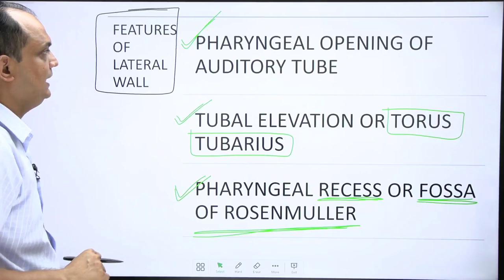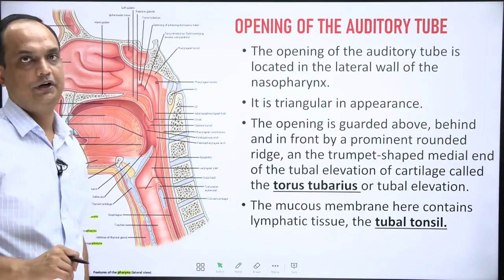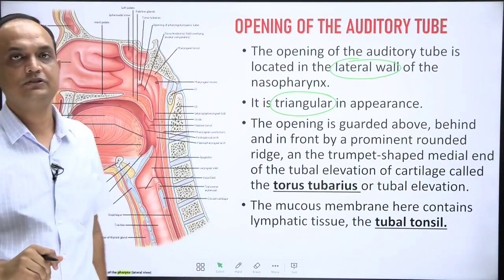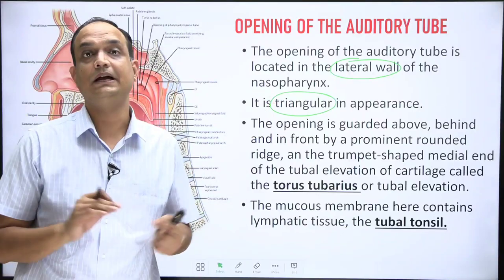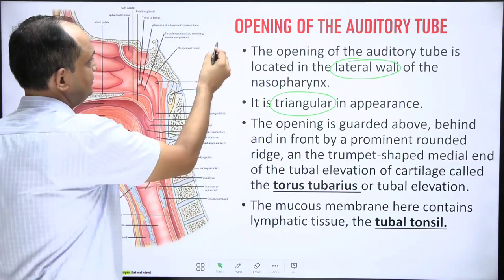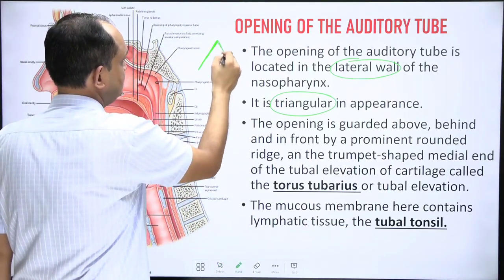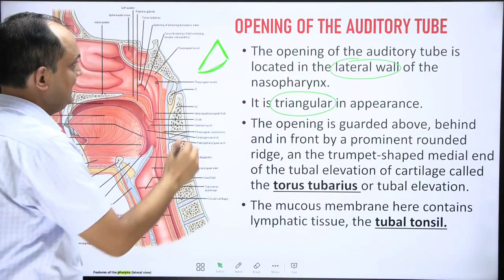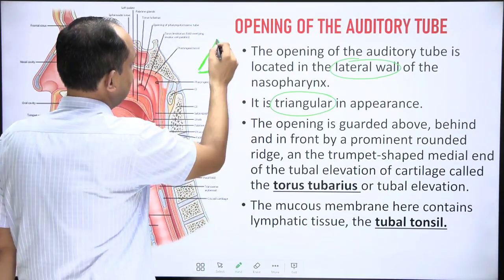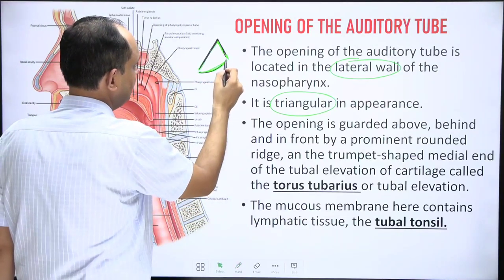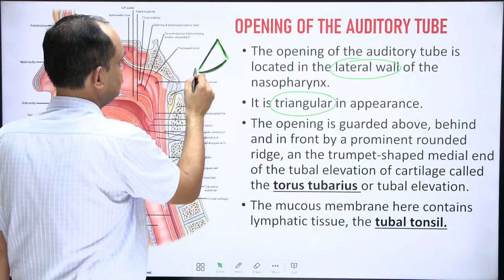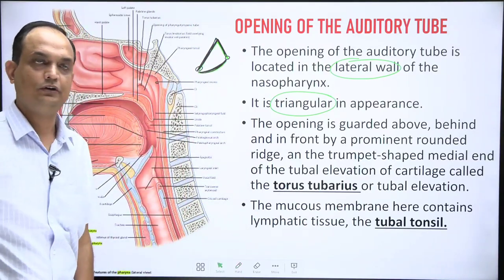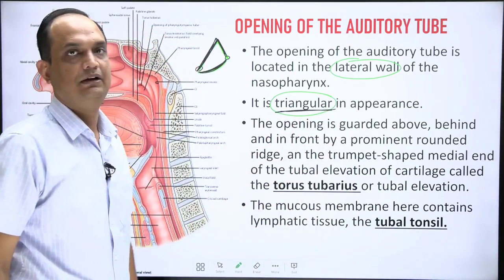The pharyngeal opening of the auditory tube is located in the lateral wall of the nasopharynx and is triangular in appearance. This is because the opening impression is created by the medial cartilaginous end of the auditory tube, which has an inverted J-shaped cartilaginous component. Its lower part is completed by fibrous tissue. Because of this inverted J-shape, the impression on the lateral wall of the nasopharynx appears triangular on the medial side.